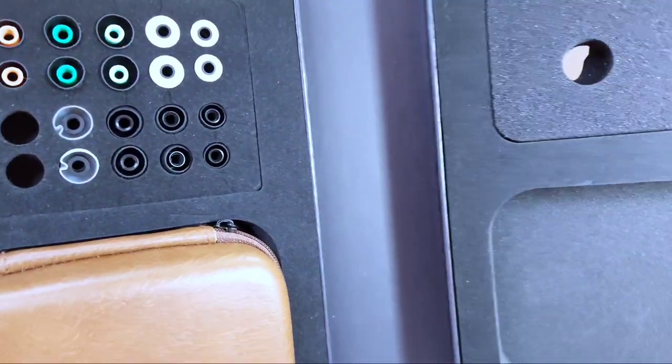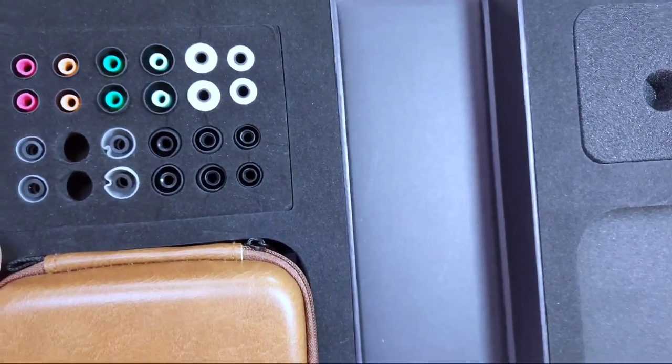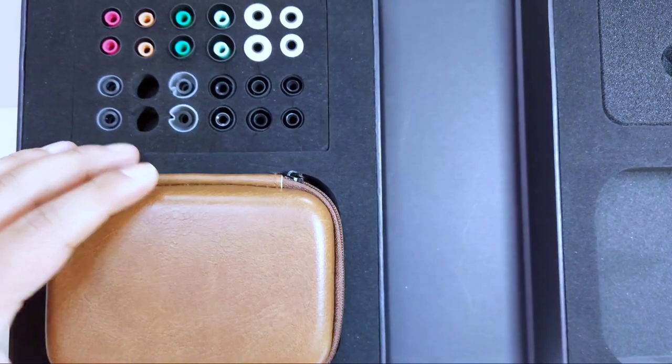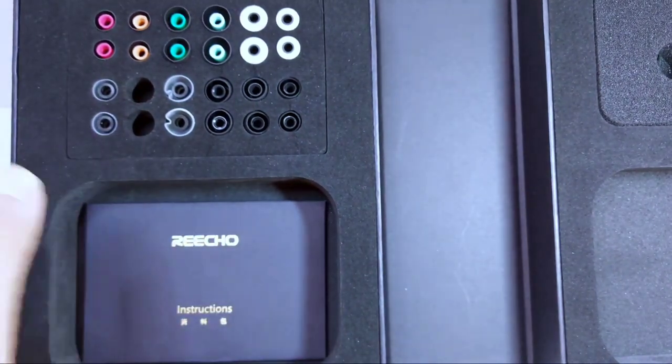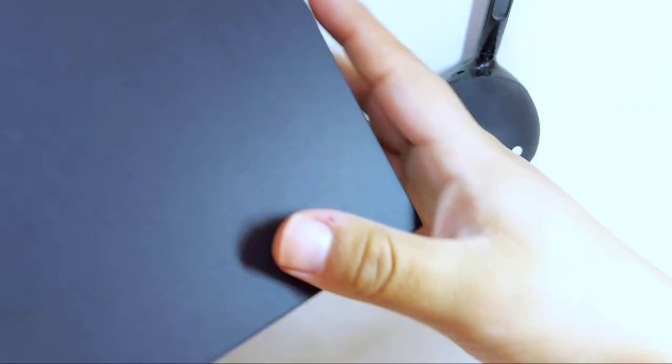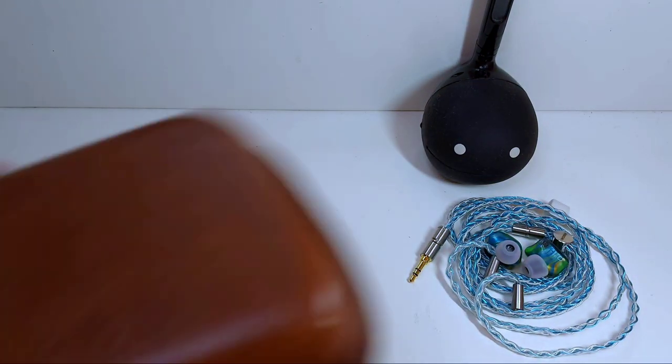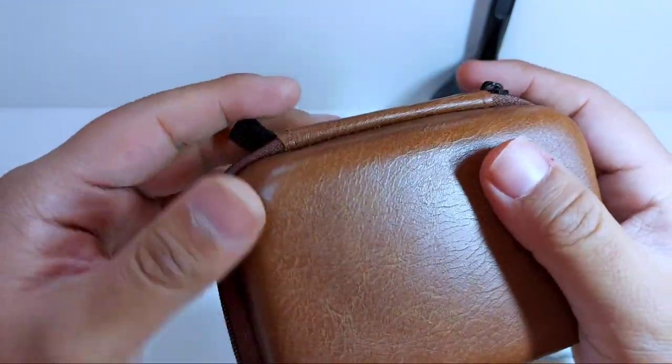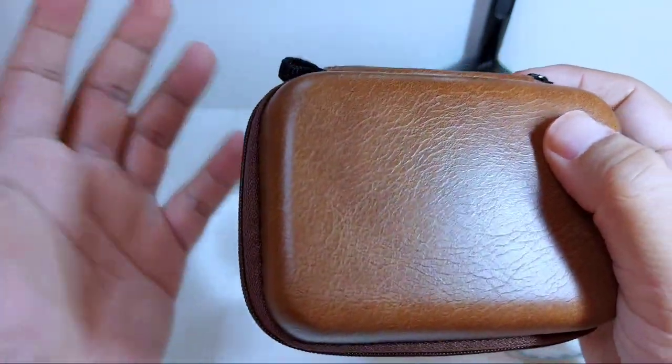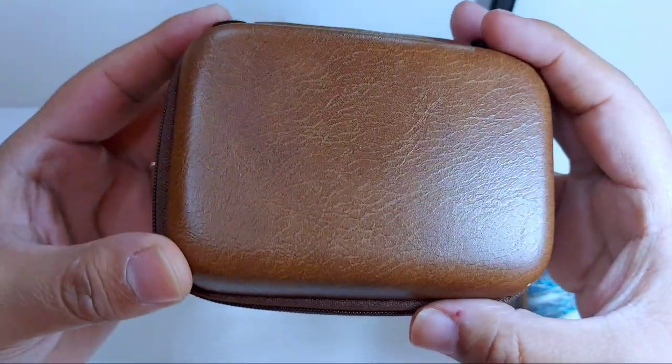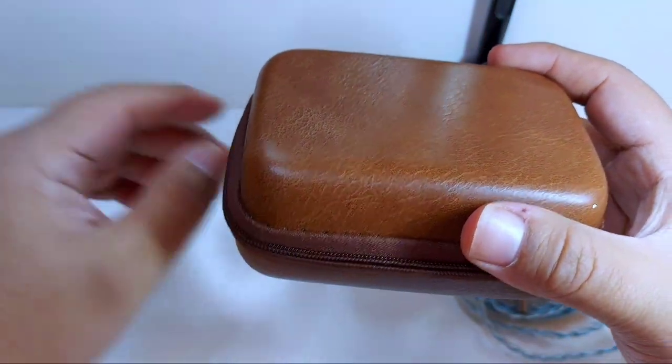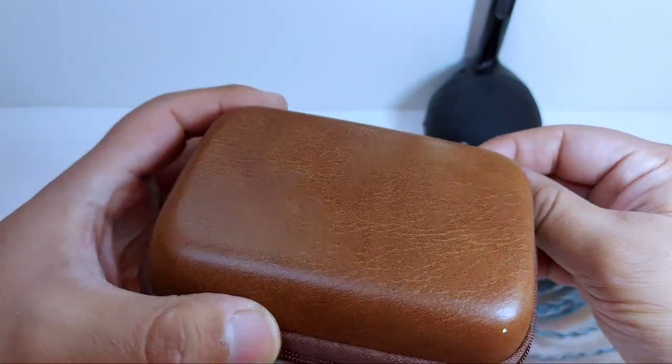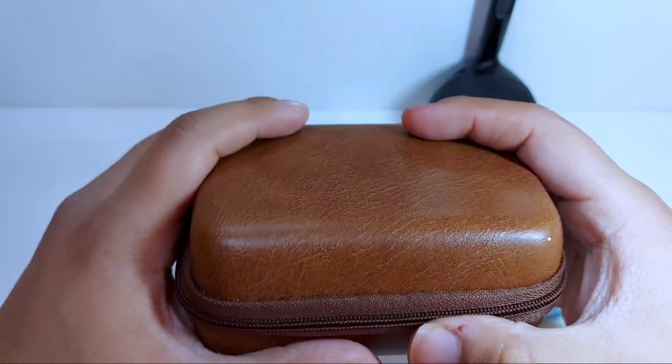La caja está imantada. Abriéndola, obviamente, podemos acceder al resto de accesorios que Richard & Peacock suministran generosamente de una gran cantidad de ellos. En esta parte, obviamente es donde tenemos el case y unos instructivos para el uso del propio auricular. Un case que es muy familiar, ya lo habíamos visto en los Thay Audio Legacy 3, muy amplio y con buena sensación a la mano.